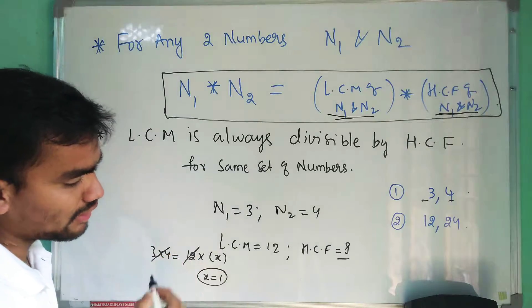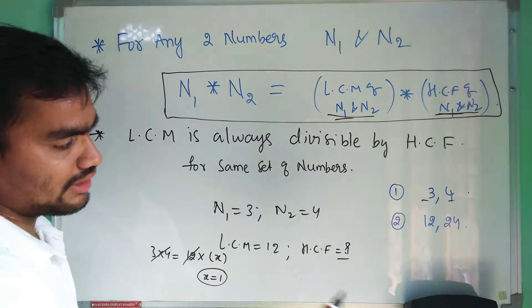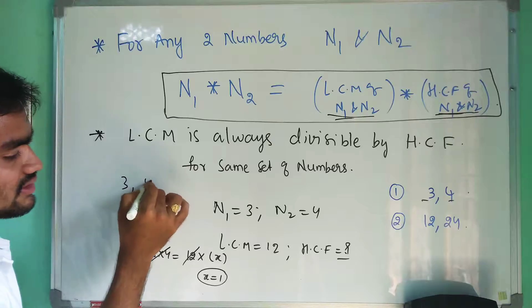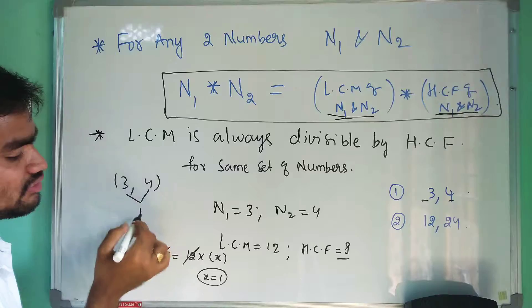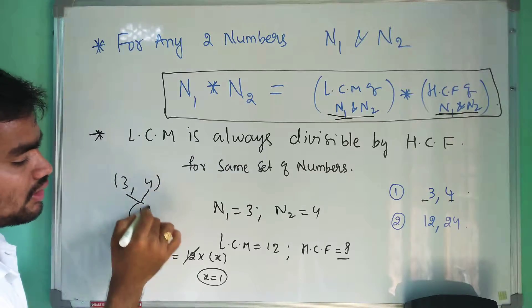And you can verify that for two given numbers, the HCF is the difference of them, which is 1. You can see that 3 is divisible by 1 and 4 is divisible by 1.